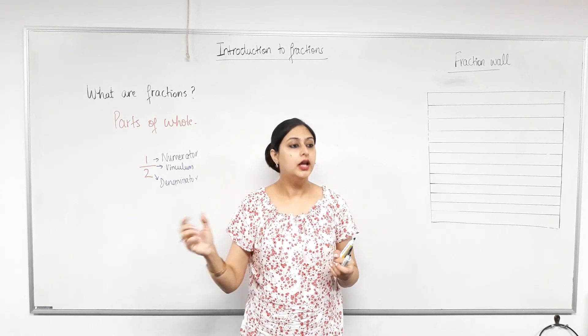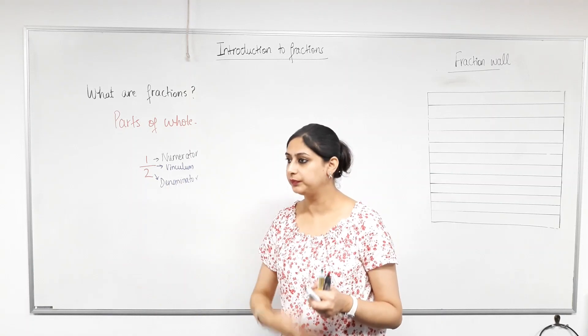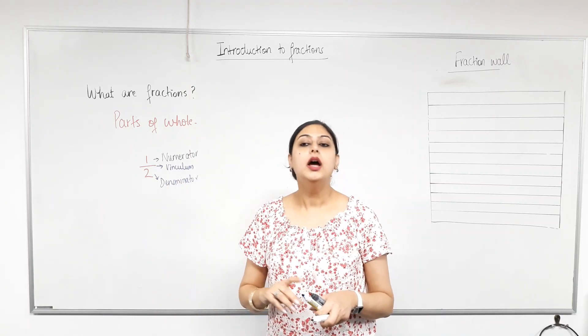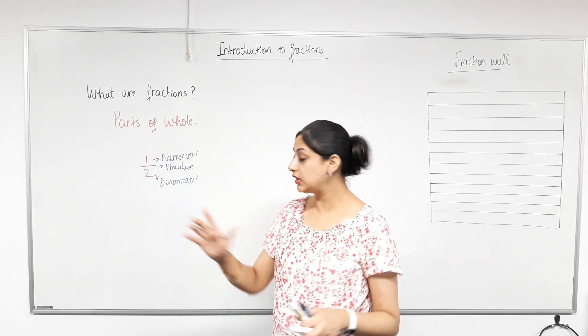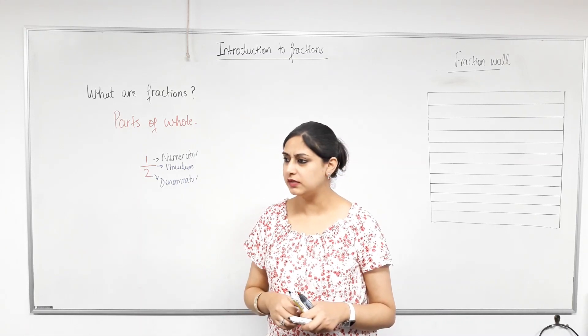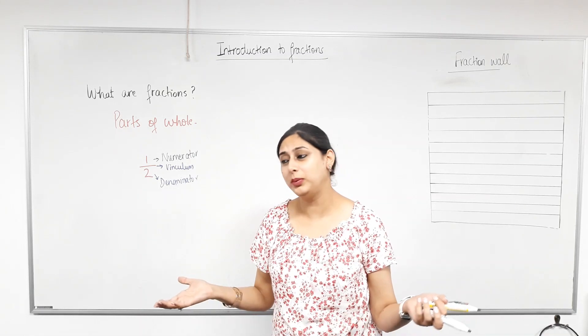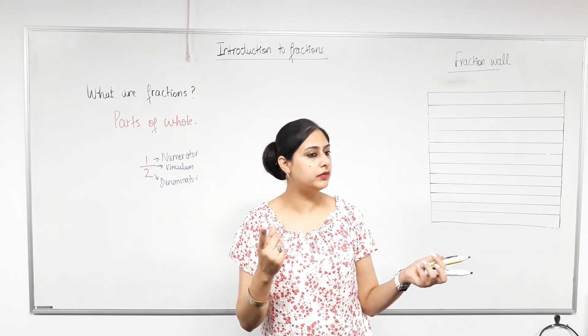Now, the bottom part is very important. Why? If I cooked a pizza, how many students are in this class? 28. 28, right? The number of pieces I cut my pizza into actually decides what the bottom number is.